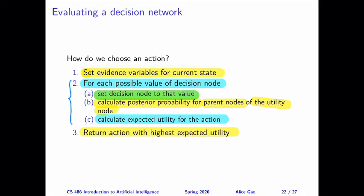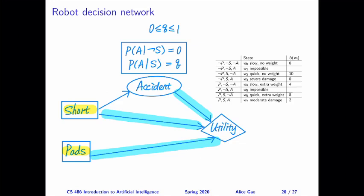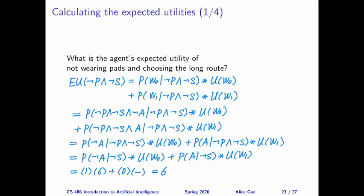Now let's do this for the robot example. We have two binary decisions to make, so there are four possible combinations. I'll show how to calculate the expected utility for one combination, and I've left space for you to calculate the other three. We need to calculate the expected utility for all four actions before we can decide which is best. The first case: the robot does not wear pads and chooses the long route.